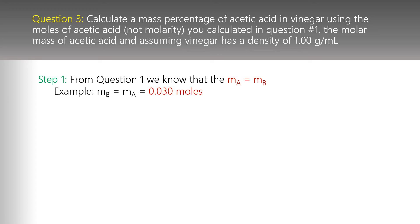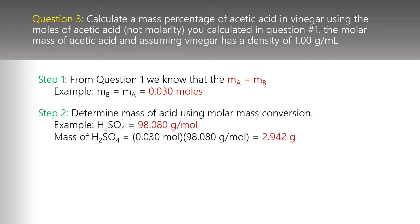Mass percentage requires us to be in mass, so the second step is determining grams of acetic acid. I'm using H₂SO₄ as an example: its molar mass is 98.080 g/mol. Take the moles you have and multiply by the molar mass — moles cancel, leaving grams. In this example, we get 2.942 grams of H₂SO₄.